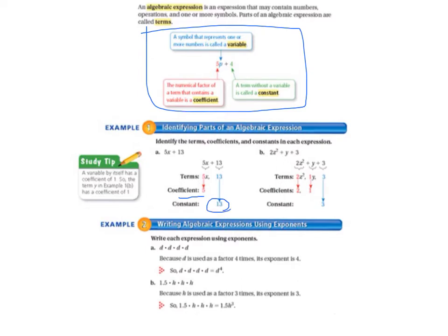Now let's take a look at example 1b, 2z squared plus y plus 3. So the terms or the parts are 2z squared, y or 1y, and 3. So those are all the terms. And then the coefficients, the numbers stuck to the variables or multiplied by the variables are 2 and 1. And the constant, the number that's never going to change, is 3.